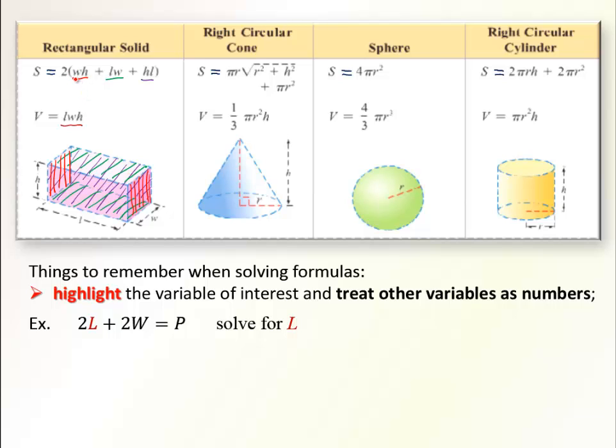So basically, we take those three dimensions—length, width, and height—and list products of any two of them, summarize them, and multiply by 2.